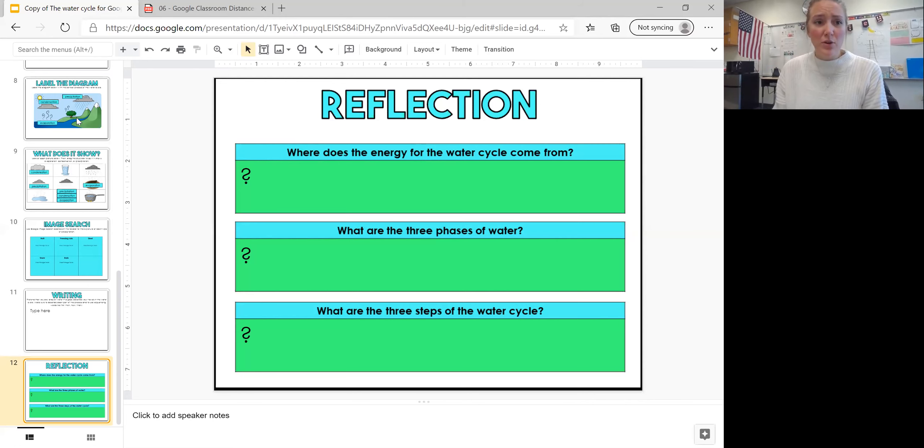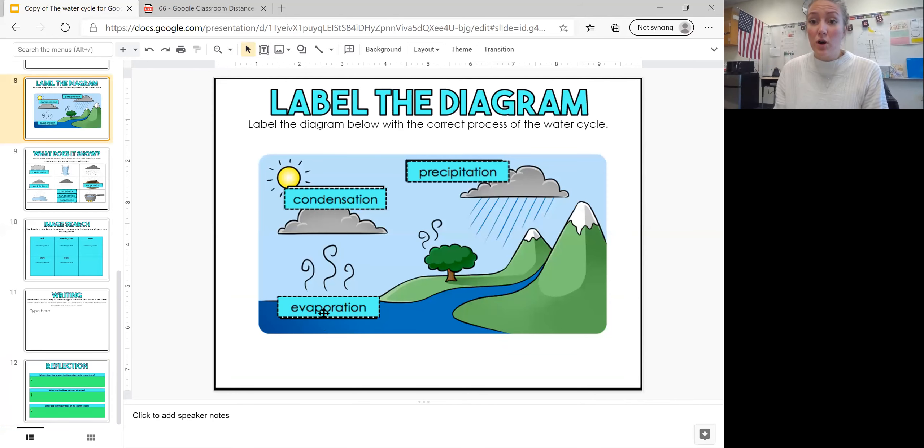We looked at the water cycle and how we start in the water. It evaporates into the air. Once it gets cold, it condensates. And then once a cloud is so full of water vapor, then it precipitates back down to the earth. And that is the water cycle.